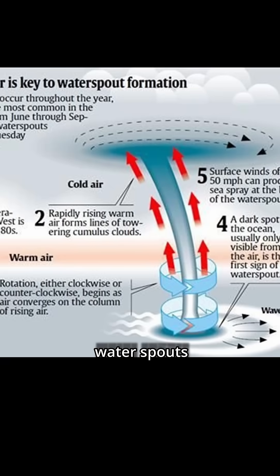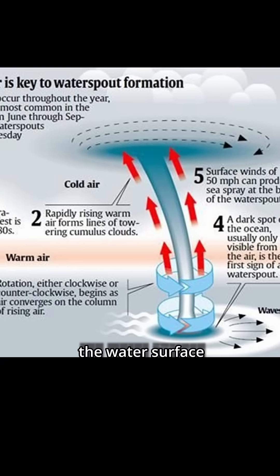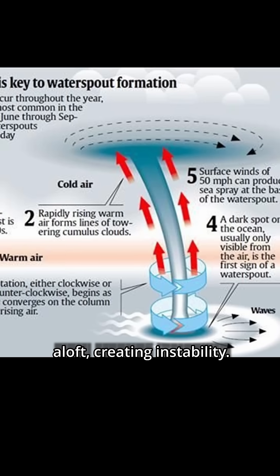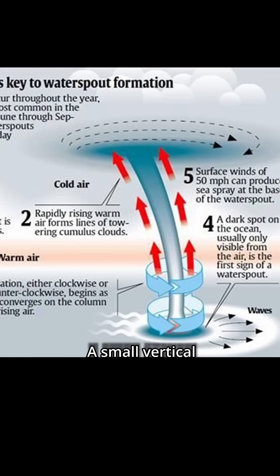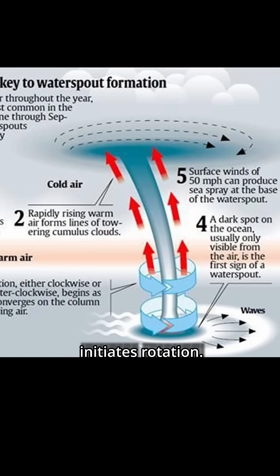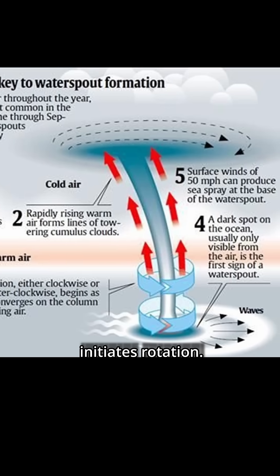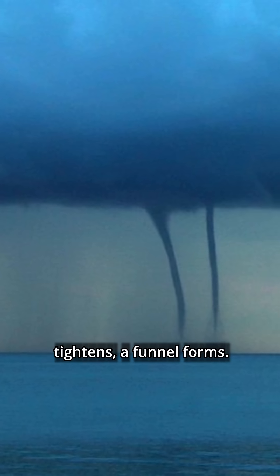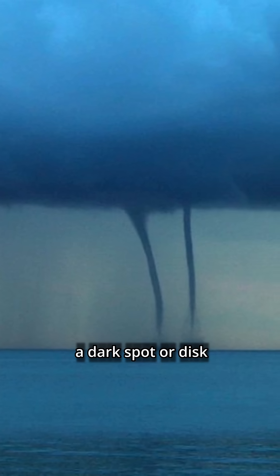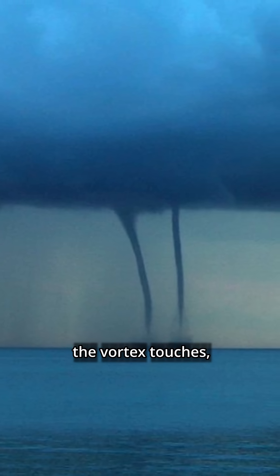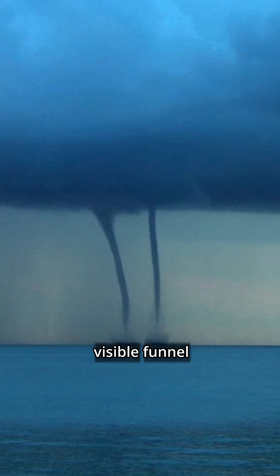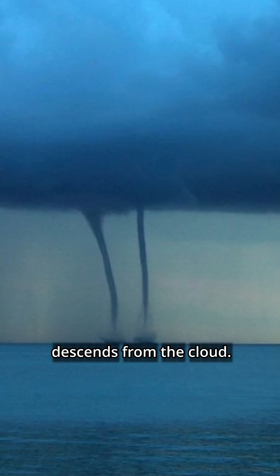Meteorologically, waterspouts form when warm, moist air near the water surface rises into the cooler air aloft, creating instability. A small vertical disturbance — sometimes a weak updraft or convergence line — initiates rotation. As that rotation tightens, a funnel forms. Initially, you see a dark spot or disk on the water where the vortex touches, then a spray ring radiates outward and eventually a fully visible funnel descends from the cloud.